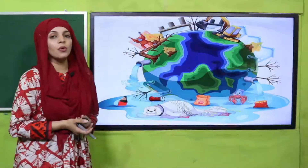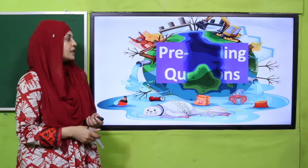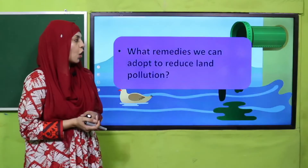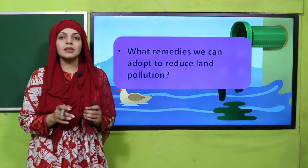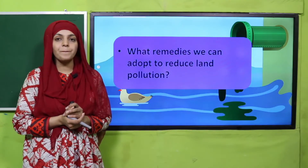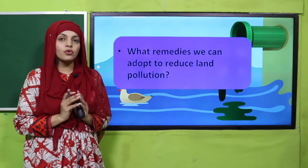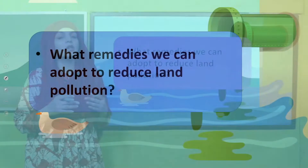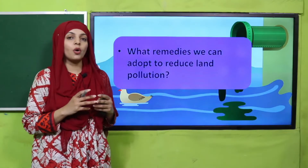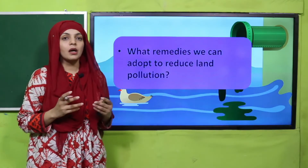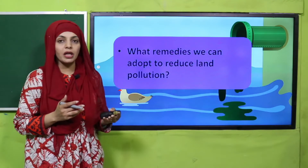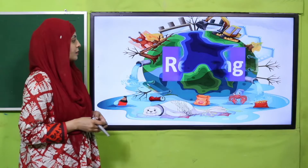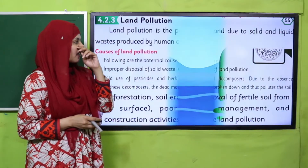Now let's move forward towards the pre-reading question. Quickly tell me: what are the remedies we can adopt to reduce land pollution? Kis tarikay se land pollution ko control kar sakte hain? By planting more and more trees, properly dumping garbage — usko open spaces mein mat phenke, khali plots mein kura nahi phenke. This is how we can control land pollution.